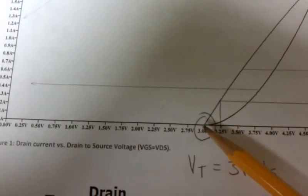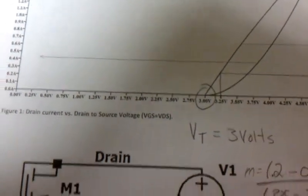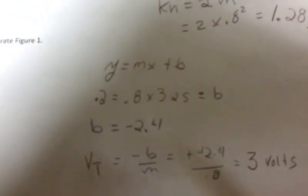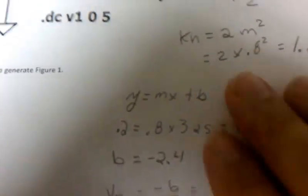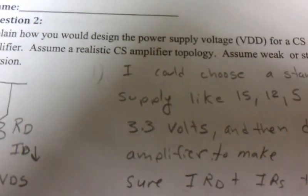Now we can see that the device turns on at three volts, so VT equals three volts. But we can also go through the y equals mx plus b form of the equation and solve for VT, and in this case we get three volts. Next question: how would you go about designing a power supply?